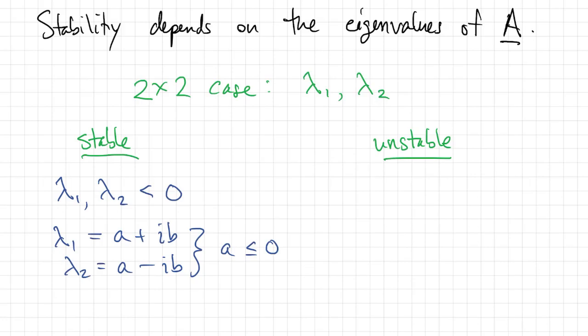On the other hand, if the eigenvalues are real and one is positive, then it's unstable. Or if the eigenvalues are complex with a positive real part, then the equilibrium is unstable at the origin.